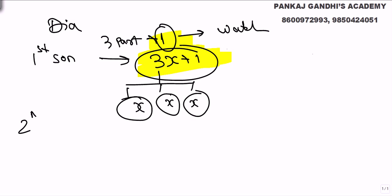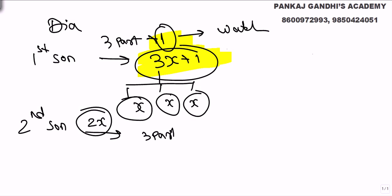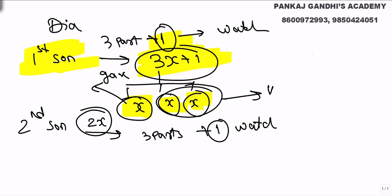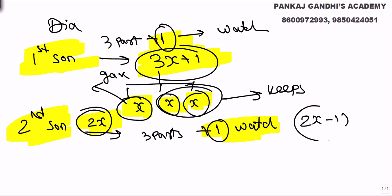Now he calls the second son. He is left with two x diamonds. Again he divides in three parts — but first he gives one to the watchman, so remaining are two x minus one. He divides two x minus one into three equal parts, each being one third of (two x minus one).